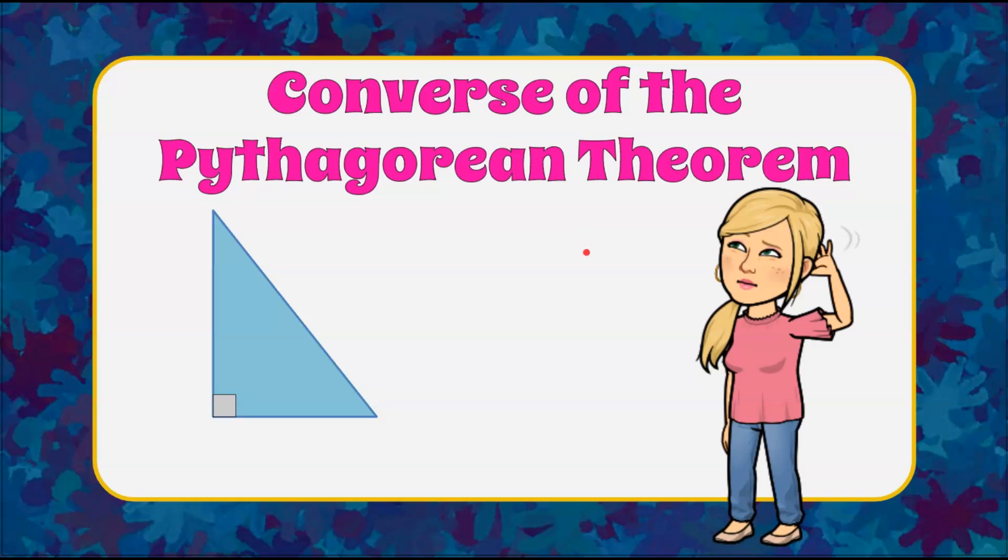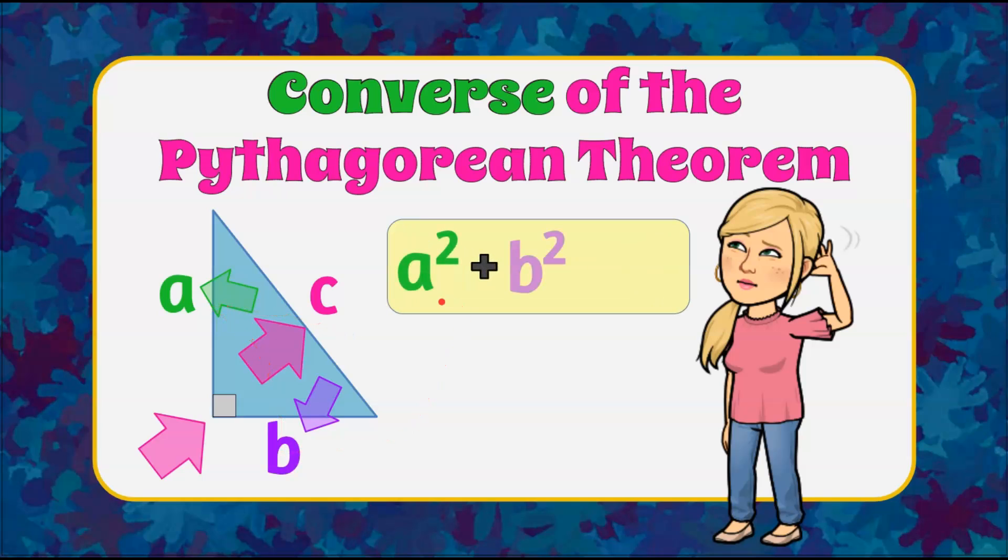It's the Magic of Math here, and today we're talking about the converse of the Pythagorean Theorem, which states in any right triangle, our longest side, the hypotenuse C, is equal to the sum of the squares of the legs. A squared plus B squared equals C squared.